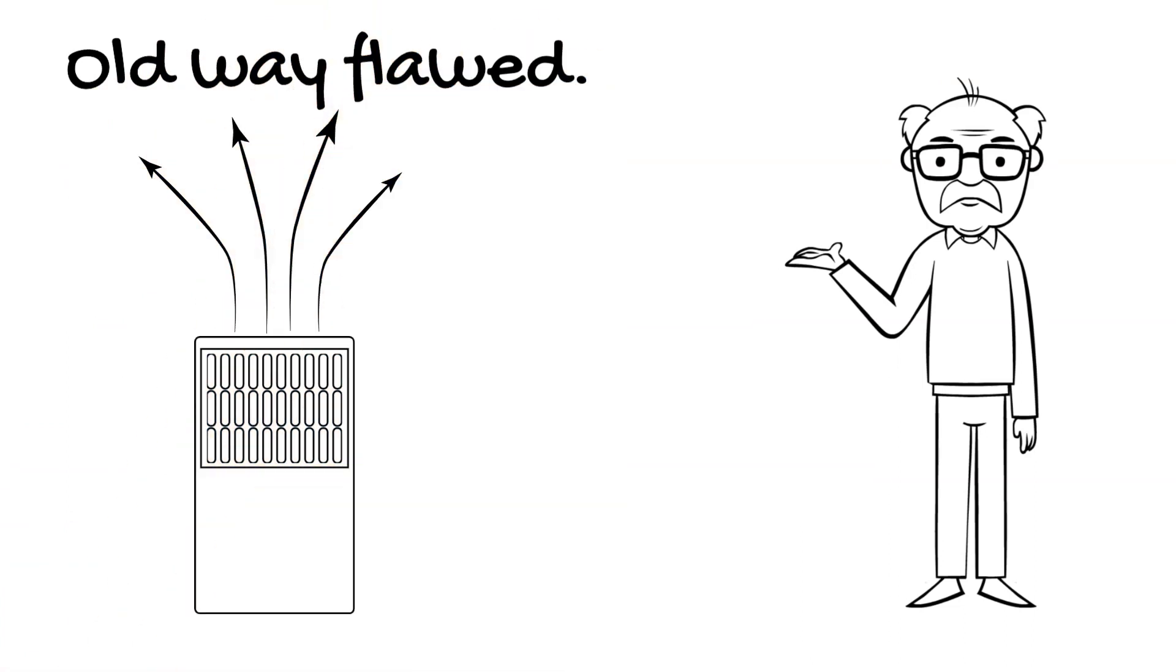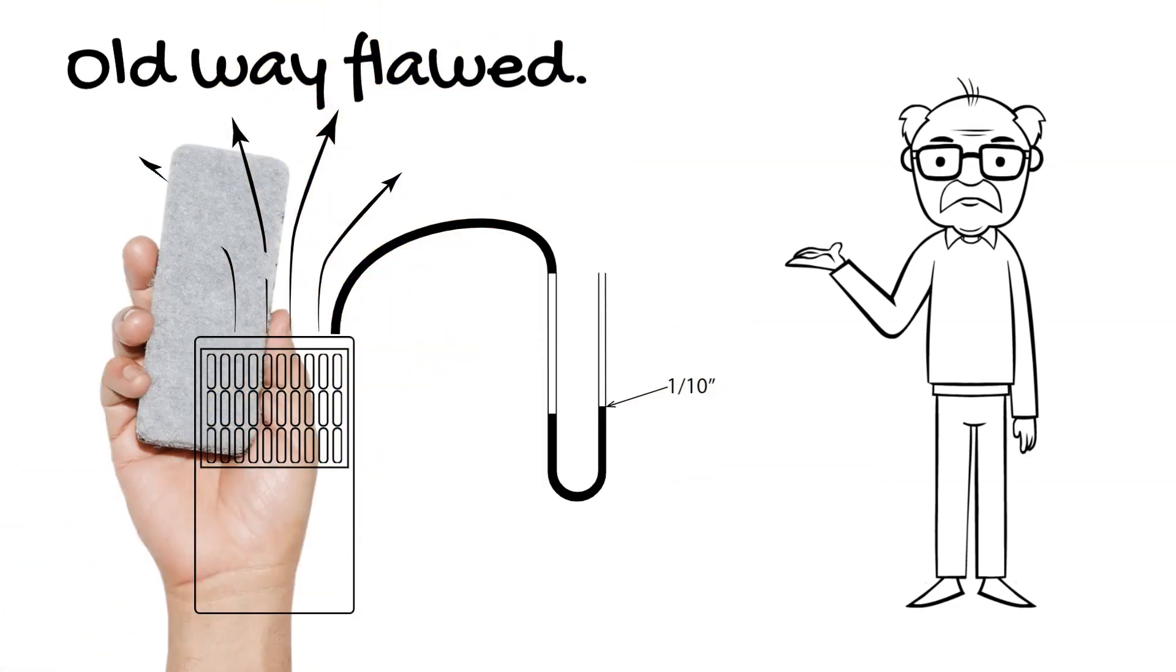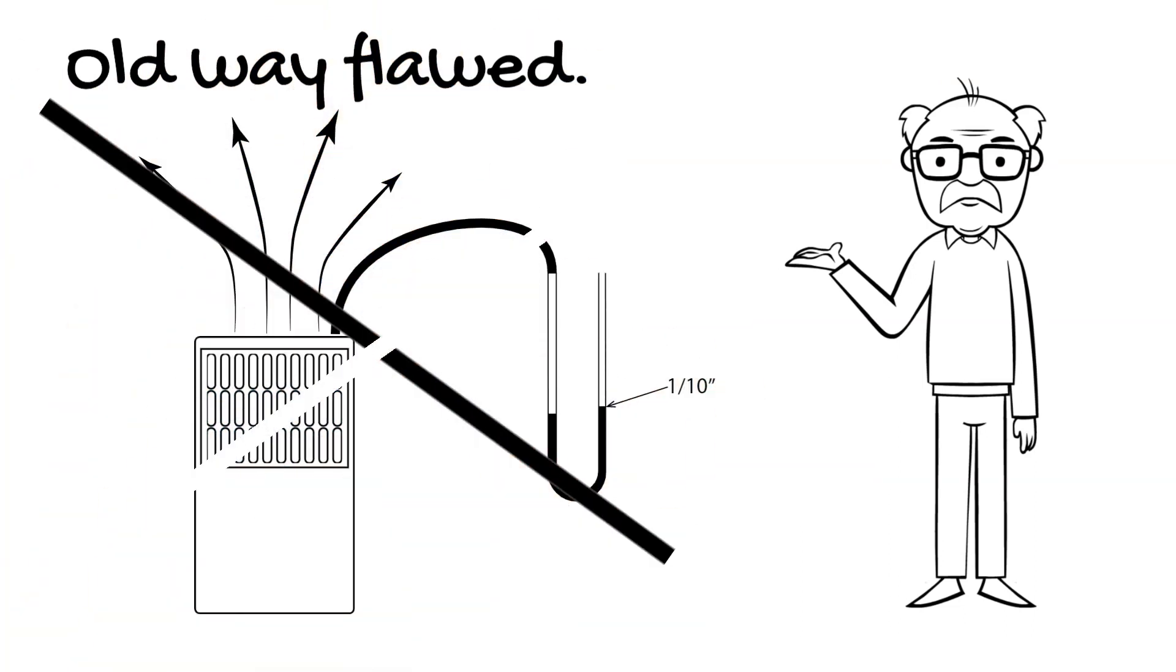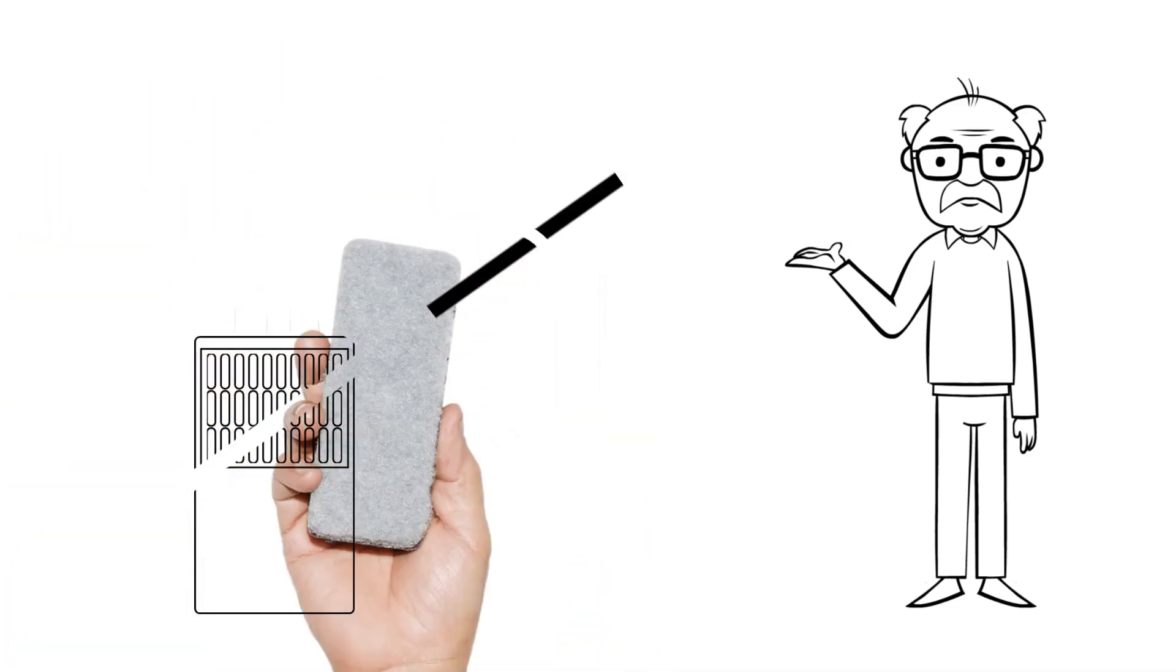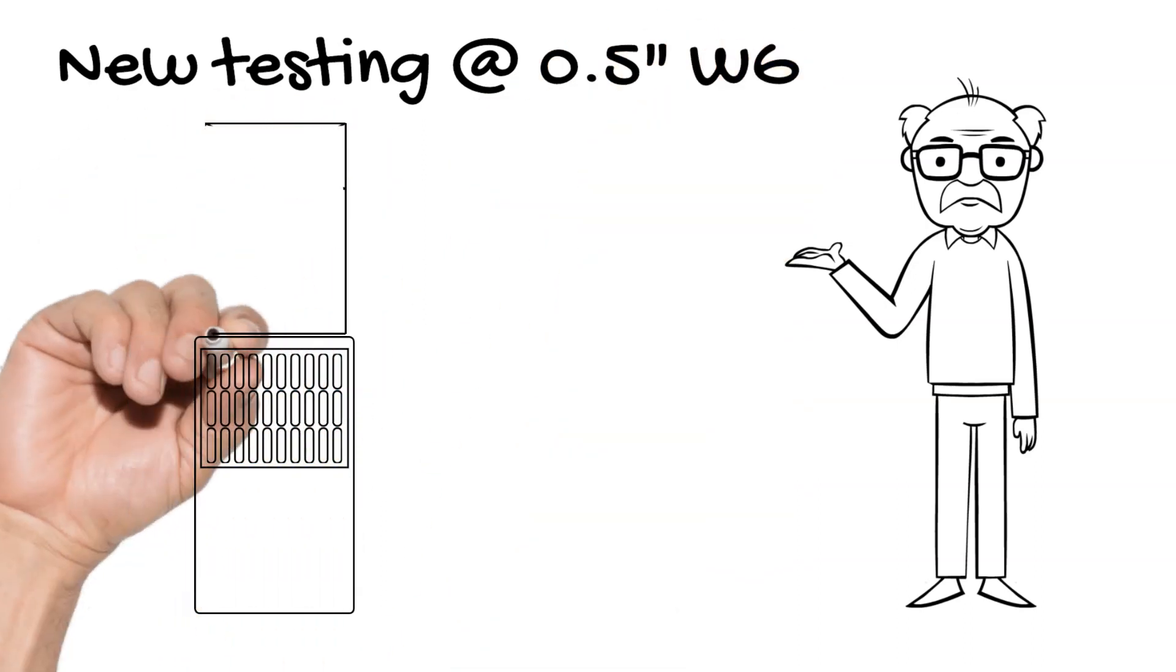That means the old way of testing was flawed because the actual amount of energy needed to deliver conditioned air was under five times greater resistance than the testing was performed at.